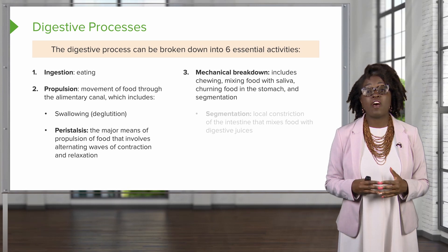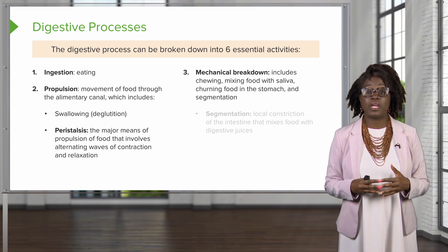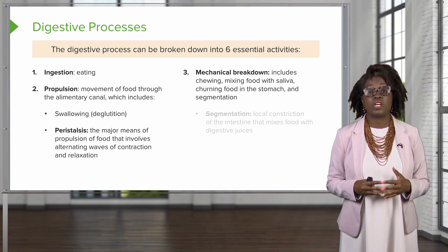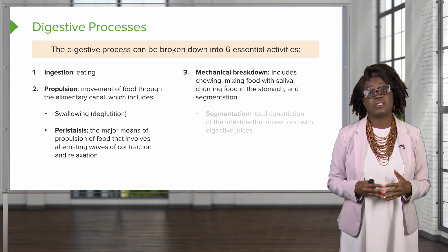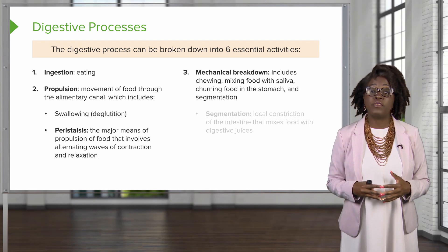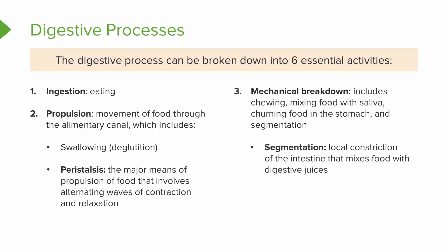Also, we have mechanical breakdown, which we sometimes refer to as mechanical digestion. This is going to include things like chewing, mixing food with saliva, the churning of food in the stomach, and segmentation. Segmentation is a process that takes place in the intestines and involves local constriction of the intestine and the mixing of food with digestive juices.